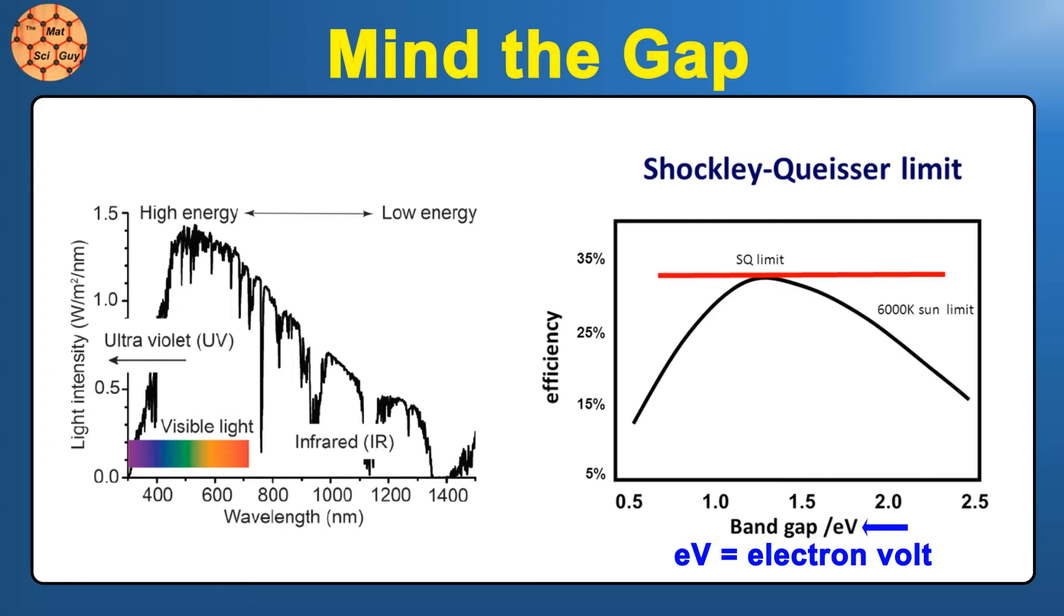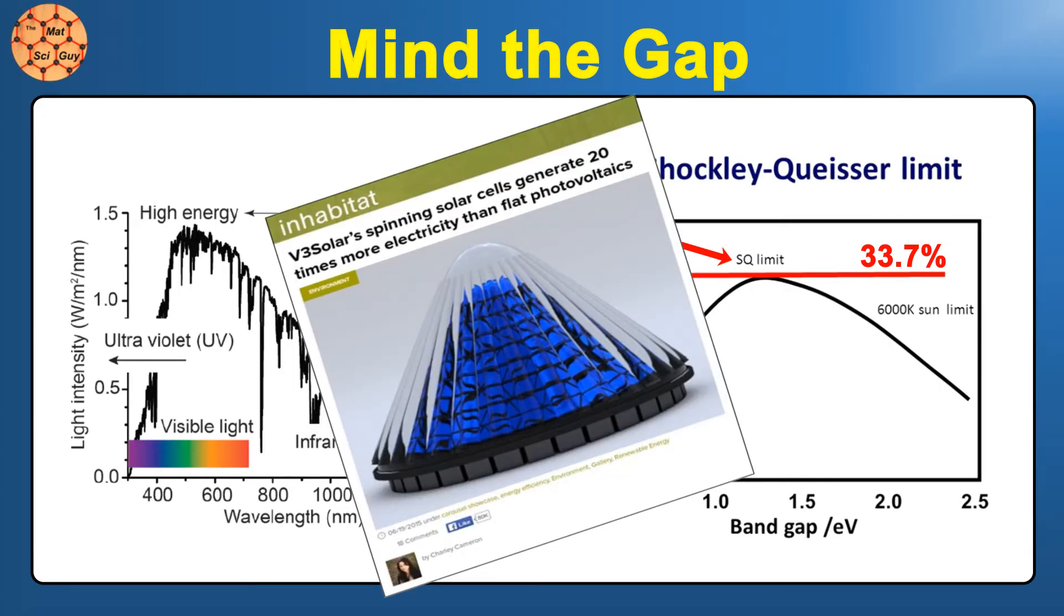Since we know the distribution of light hitting Earth, it's possible to calculate the ideal bandgap for a single layer solar material. In terms of electron volts, a unit of energy equivalent to moving one electron across one volt of potential, the ideal bandgap is about 1.3. The same calculations can be used to find the maximum theoretical efficiency of any single junction solar panel, which comes out to around 34 percent.